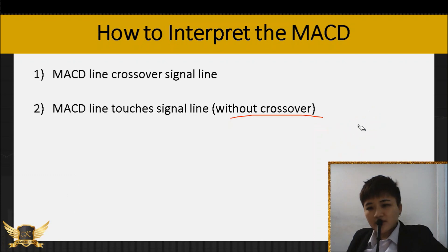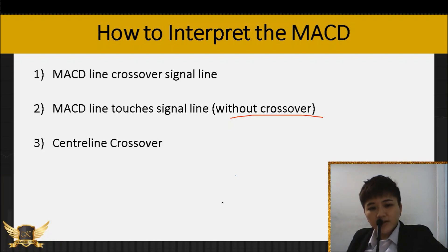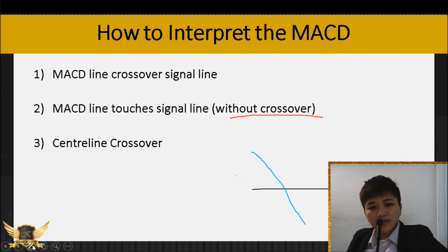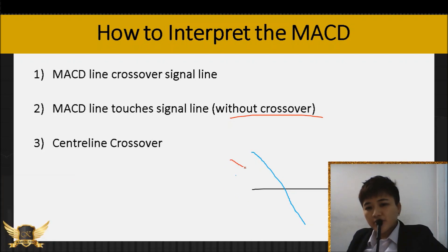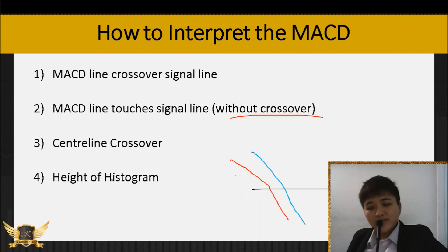Another way to interpret it is when there's a center line crossover. For example, when your MACD line crosses from above to below the center line, and also when your signal line crosses from above to below the center line — or vice versa, from downwards to upwards.